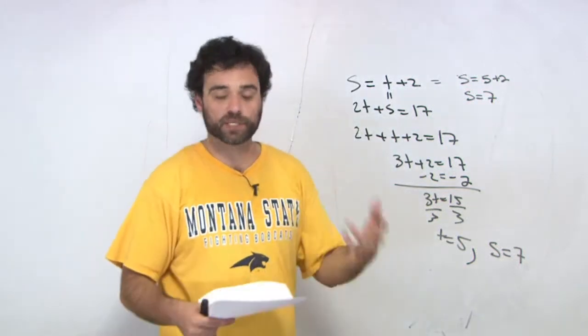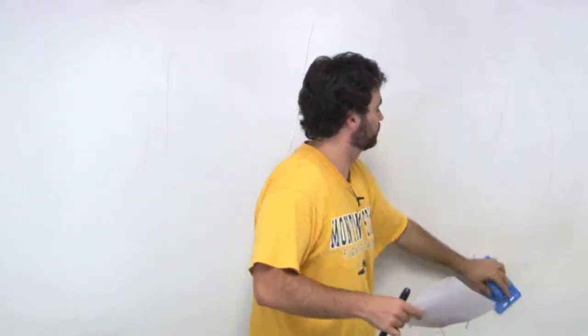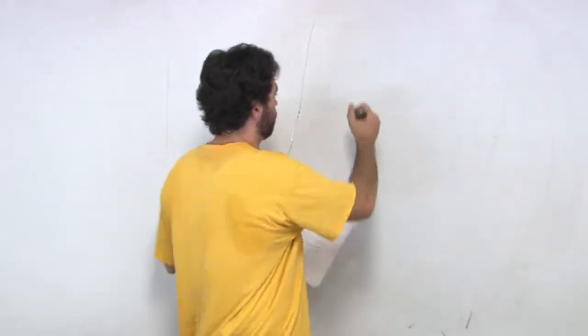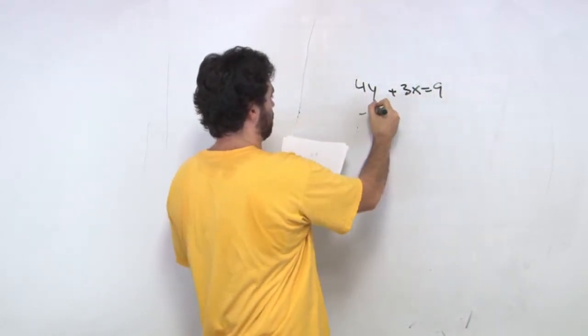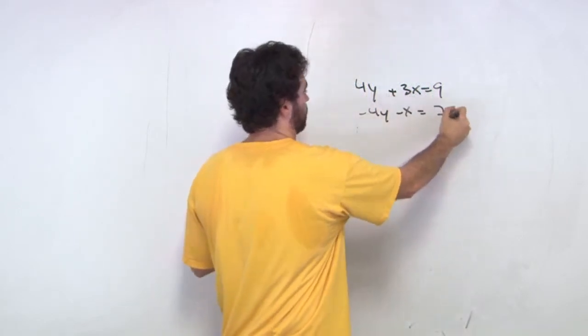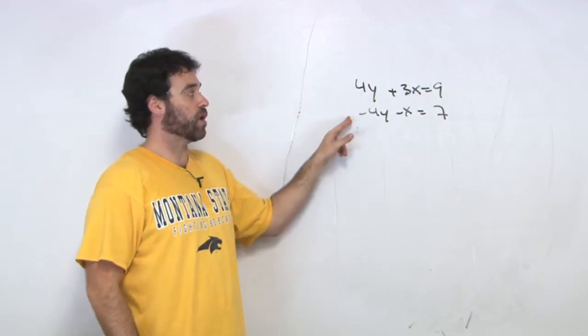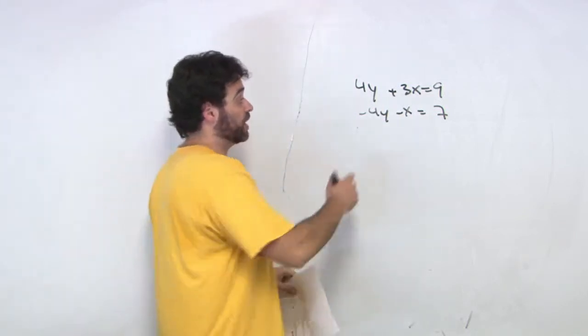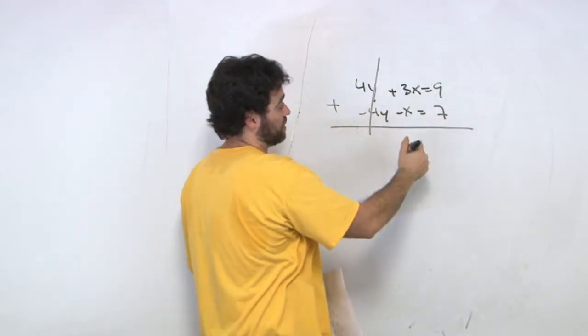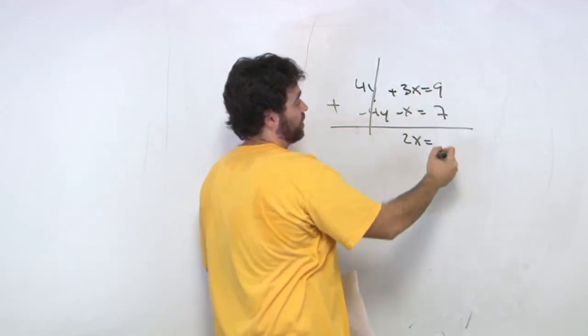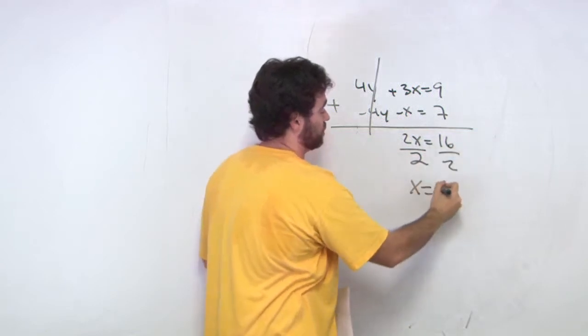And then we also did the addition method, and we'll look at one of those problems, the difference there. And we'll say that 4y plus 3x equals 9, and negative 4y minus x equals 7. If we look at this problem, we see that we have a positive 4 and negative 4y. So if we add the two equations to each other, that will cancel out our y's. So if we add them up, we get 3x minus x is 2x. 9 plus 7 is 16. Divide out the 2, and x is equal to 8.